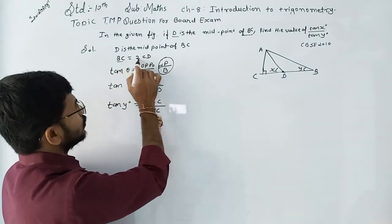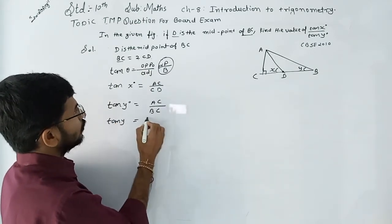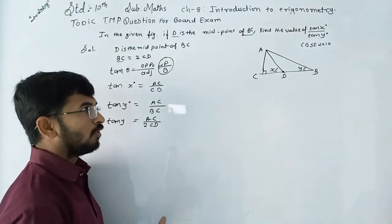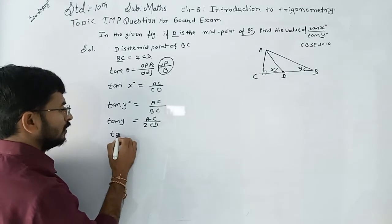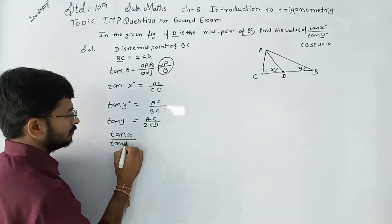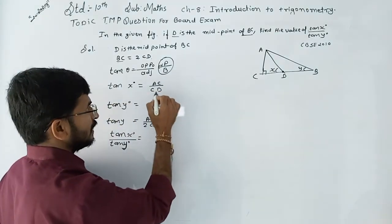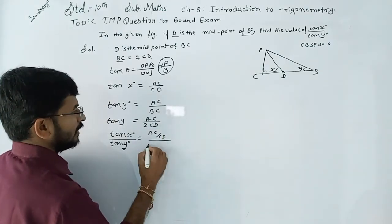In place of BC we can write 2CD. Now we want to find the value of tan(x) upon tan(y). What is the value of tan(x)? AC upon CD. And what is the value of tan(y)? AC upon 2CD.